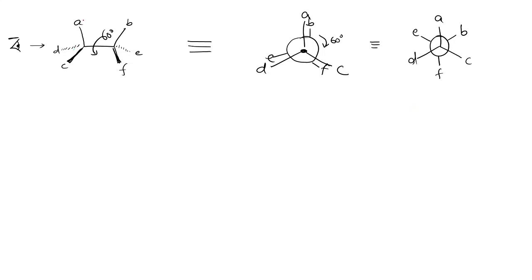We can also see that this wedge and dash is drawn in eclipsed conformation. You can see that the groups are right behind each other. So this is a wedge and dash in eclipsed, and yes, you can see conformation in wedge and dash also.